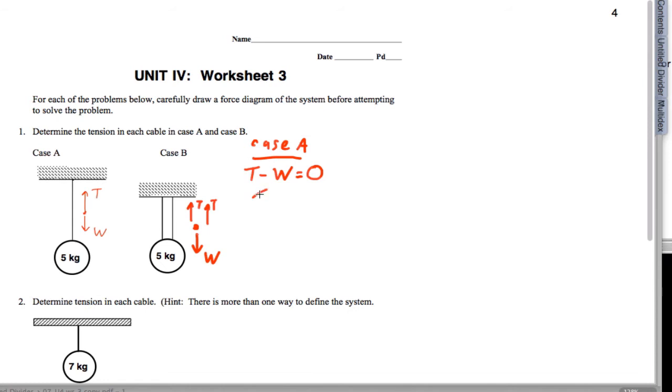Now, some of you might have gone ahead and just skipped straight to writing it like this. And that's fine in this case because there's only two forces and it's pretty simple. And then we plug in the numbers for the tension, five times 9.8, and we end up getting 49 newtons for our force.